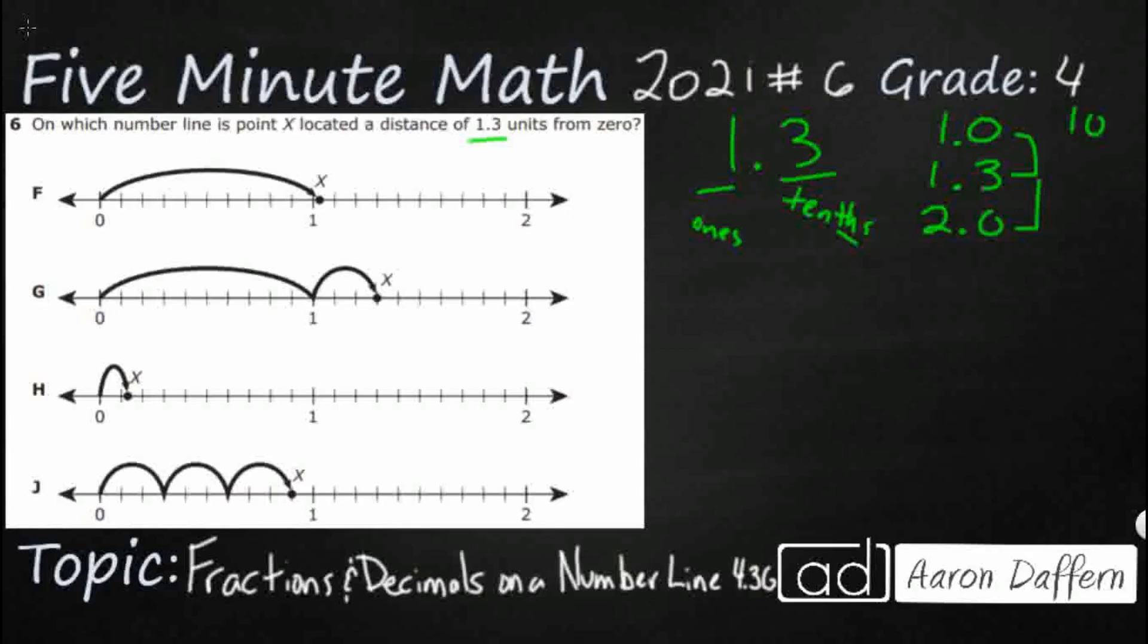And if that doesn't make sense, what we could do is we can always just take the decimal away, and see how 10, 13, 20 kind of acts that same way. Now obviously this 1.3 is going to be a little bit closer to the 1.0, because 13 is a little bit closer to 10 than it is to 20, but it's going to sit right in between those two.